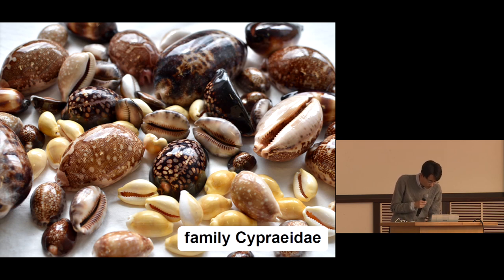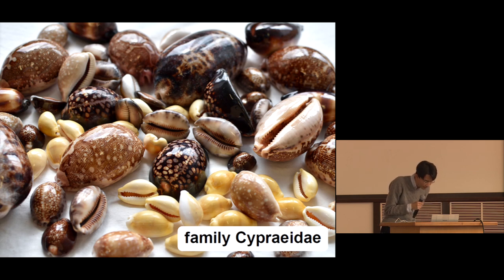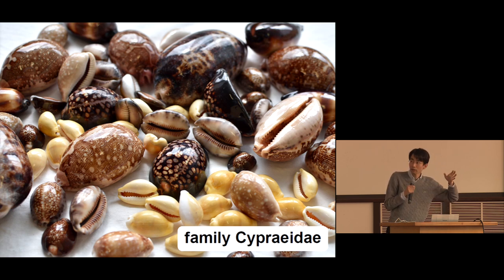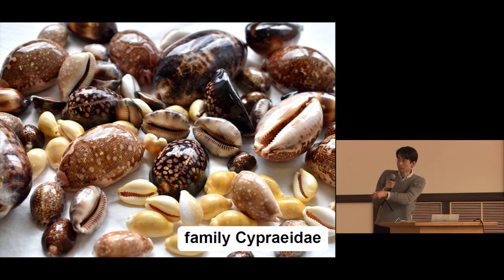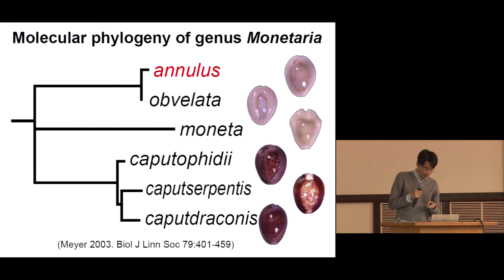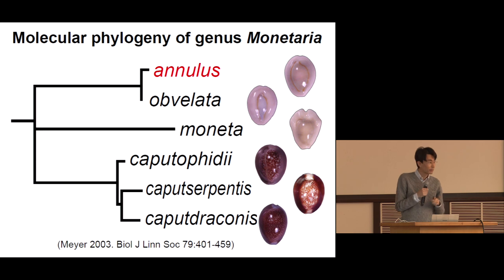The shells in this photo are all cowries. The larva in the previous slide also belongs to cowries. Small planktonic larvae finally grow up to snails with these beautiful shells. The word cowries is a common name, and scientifically they make the family Cypraeidae, or Cypraeidae in Latin pronunciation. The family Cypraeidae comprises more than 200 species, all of which are widespread along tropical and subtropical seas.